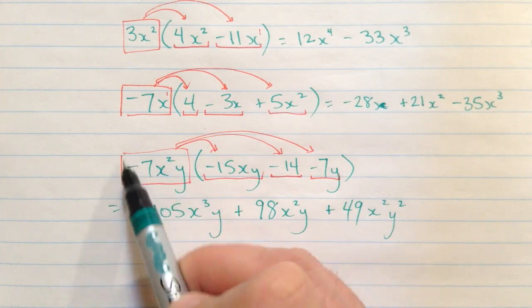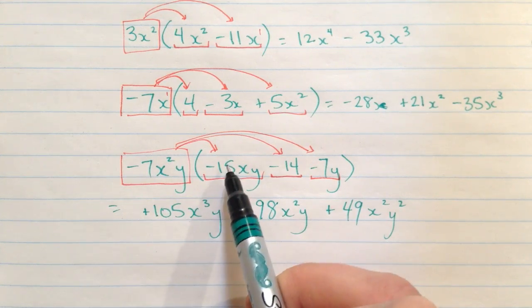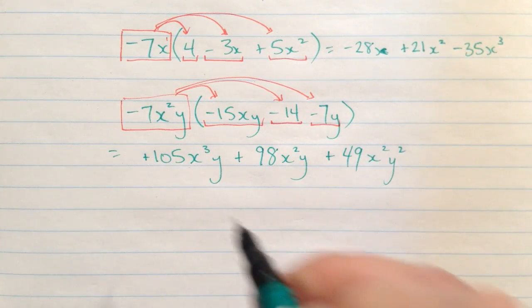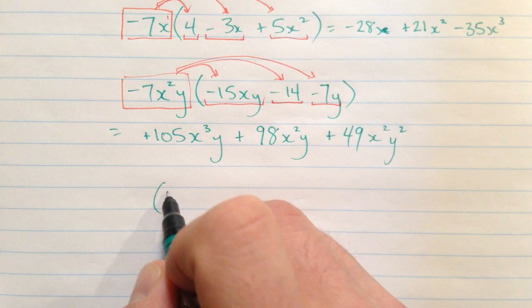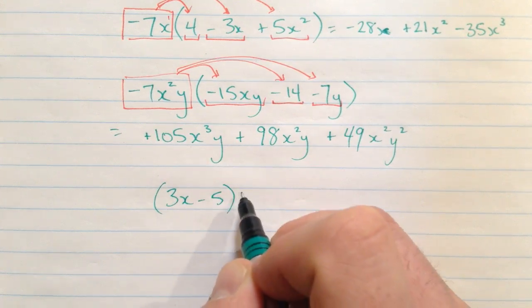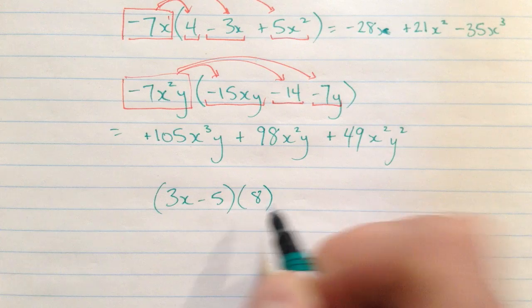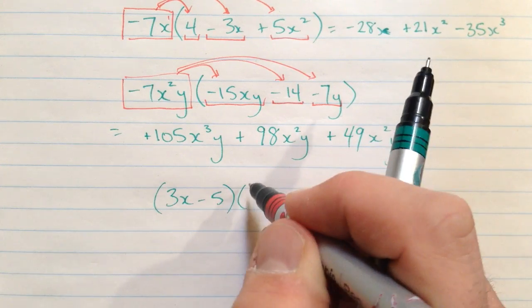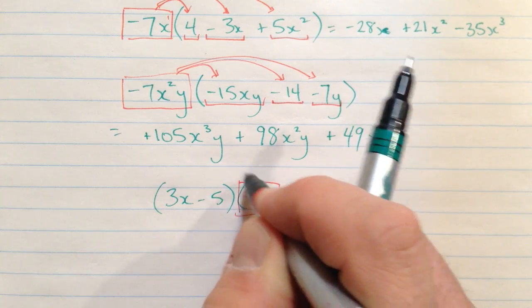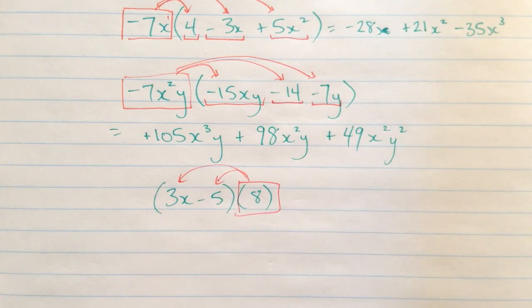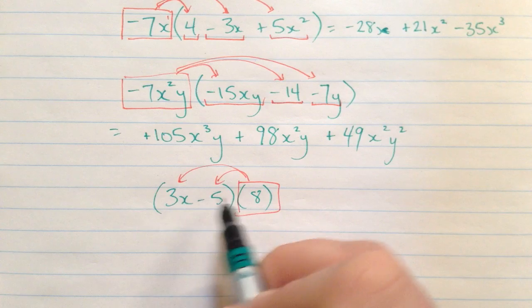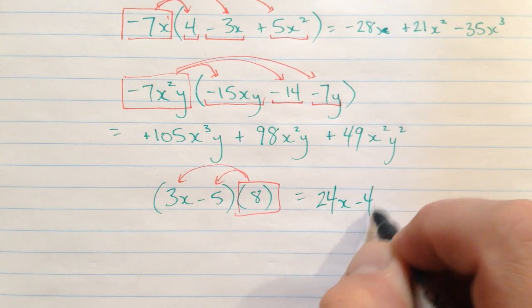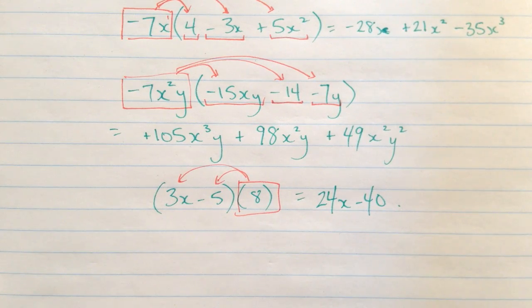Okay, so in each case, I've multiplied this thing that I've written out front here by each term on the inside. And just to be clear, it doesn't have to be written out front. I could have an expression like this, 3x minus 5 times 8. These are still being multiplied together, so if you want, you can rewrite it, or you can just do things like this. It's the same thing. This is being multiplied by each separate term on the inside. So this one would be 24x minus 40. All right, I hope that helps you out. Thanks.